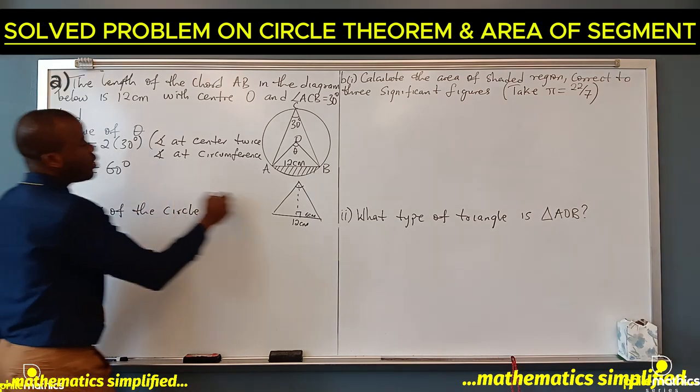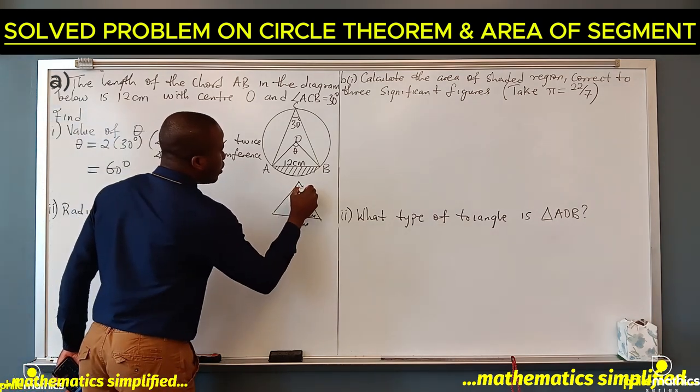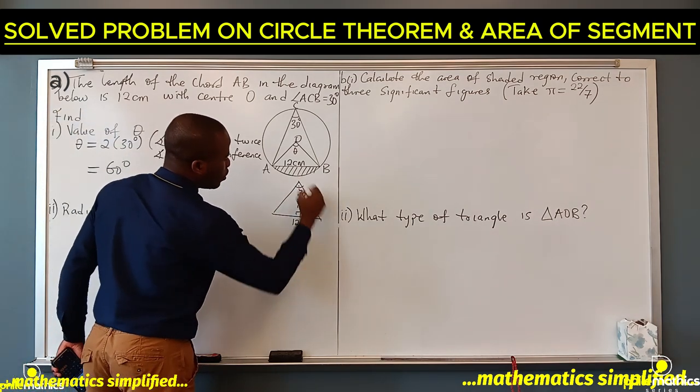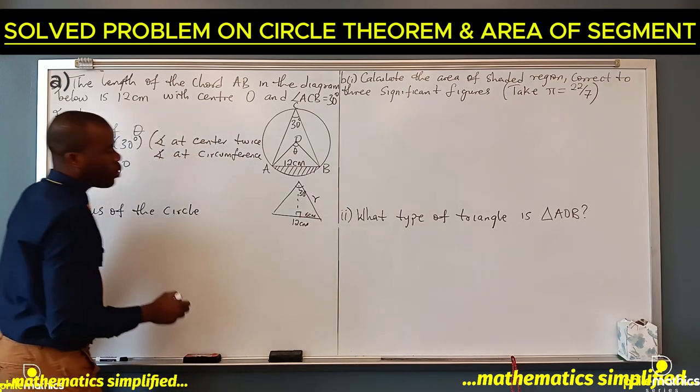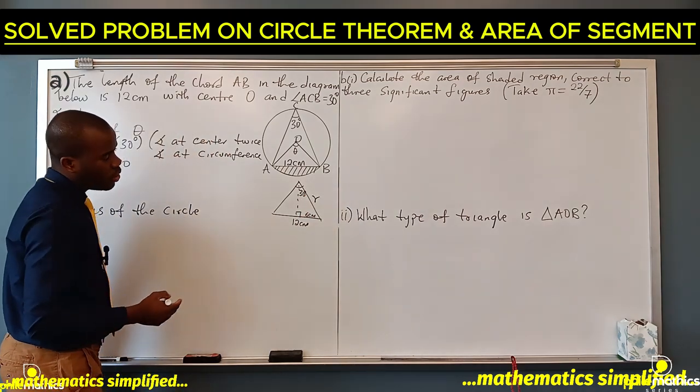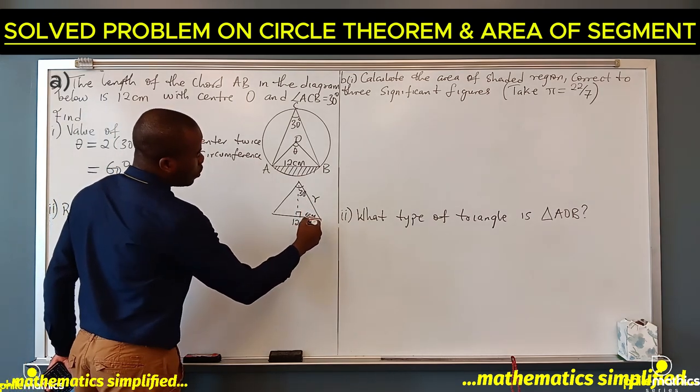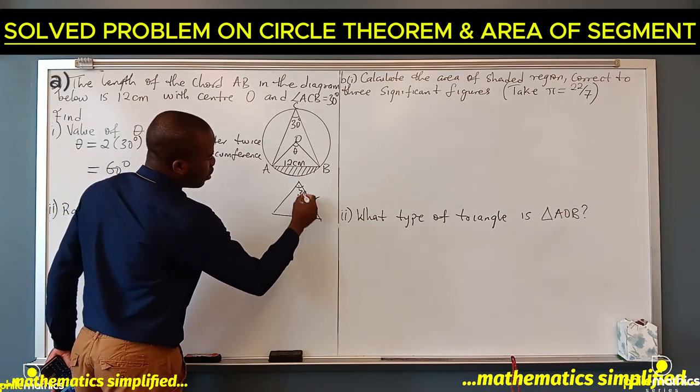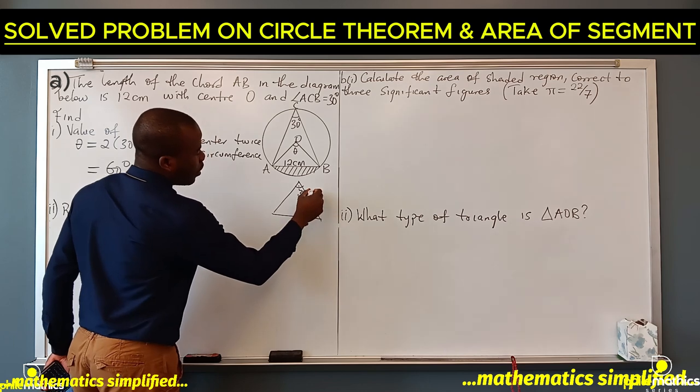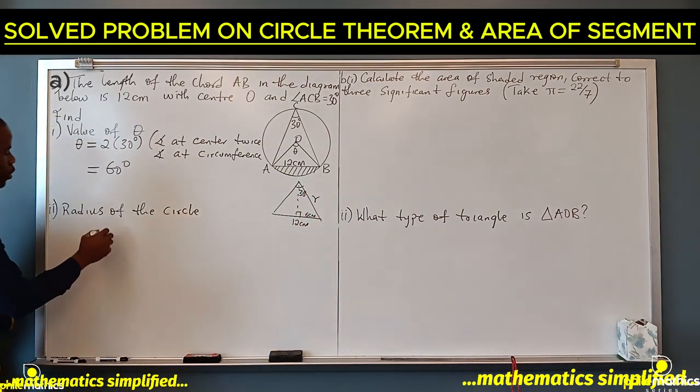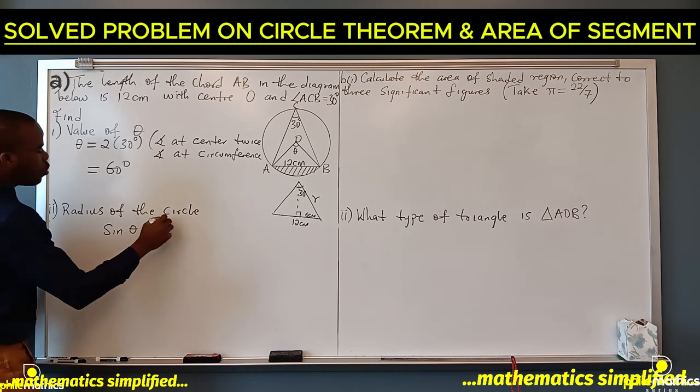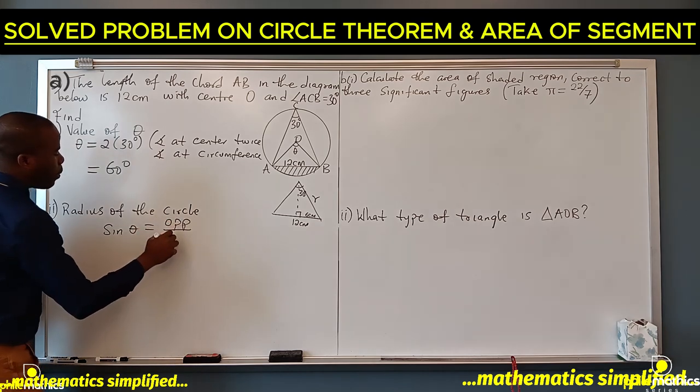And since the whole of here is 60 degrees that we have calculated, here will be 30 degrees. So we are looking for the radius which is r. We can use the three trigonometric ratios to find what r is. So we are using opposite over hypotenuse which is sine. So sine theta we know is opposite by hypotenuse.